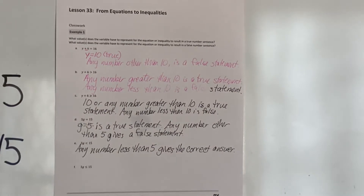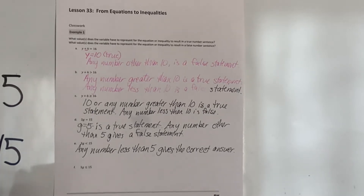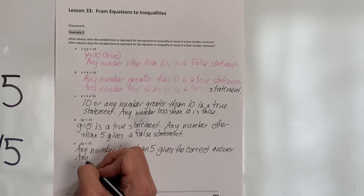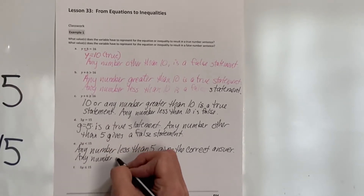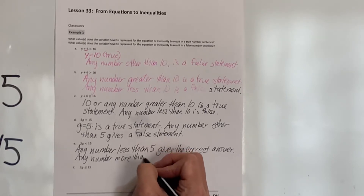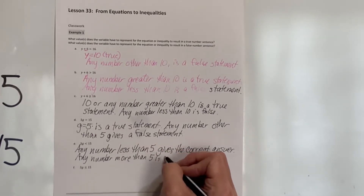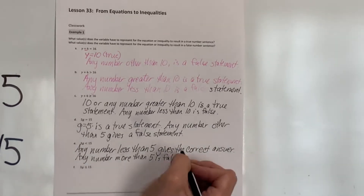Any number more than 5 is false — that gives us a false number sentence.